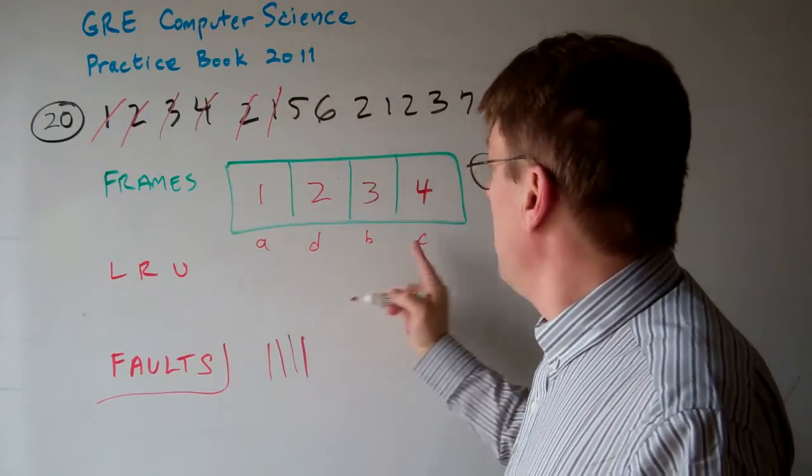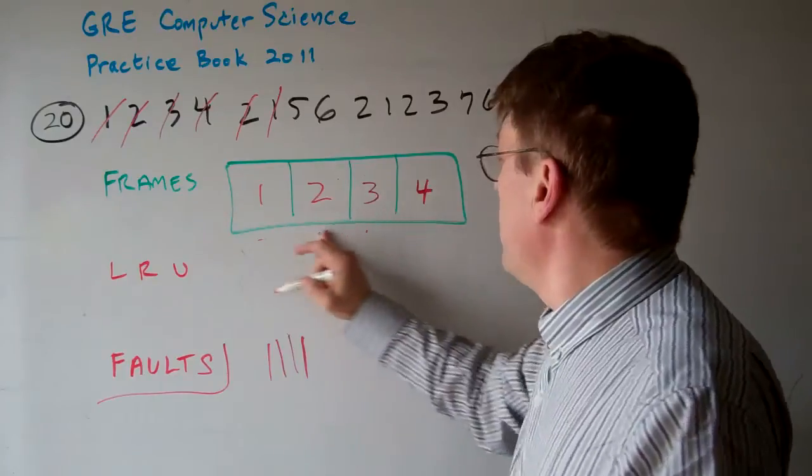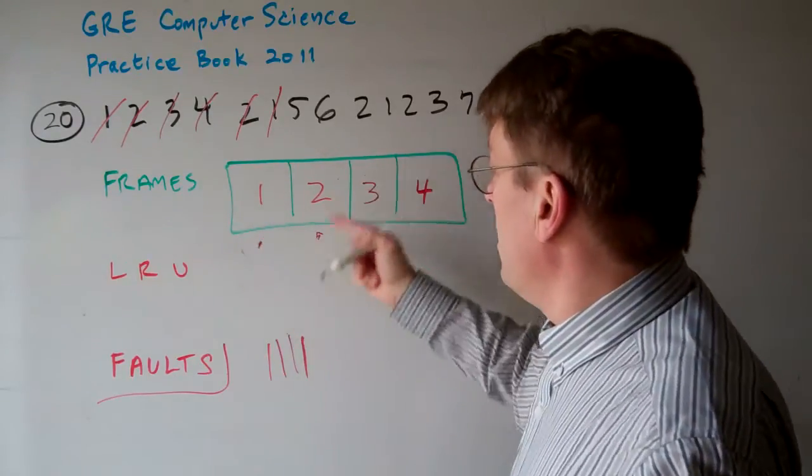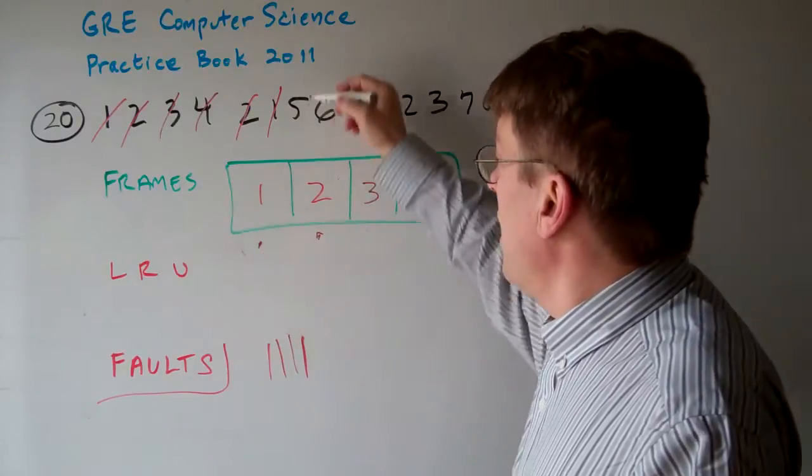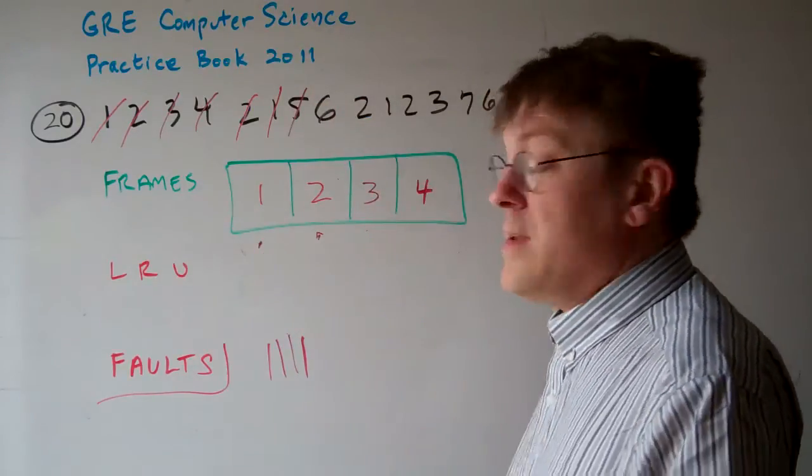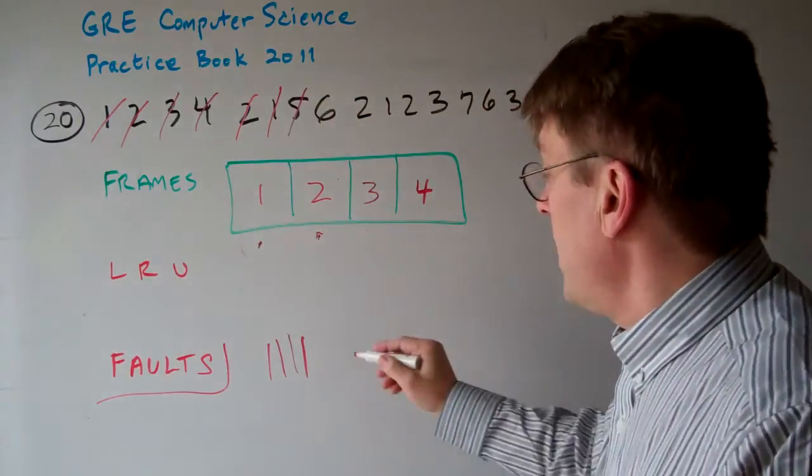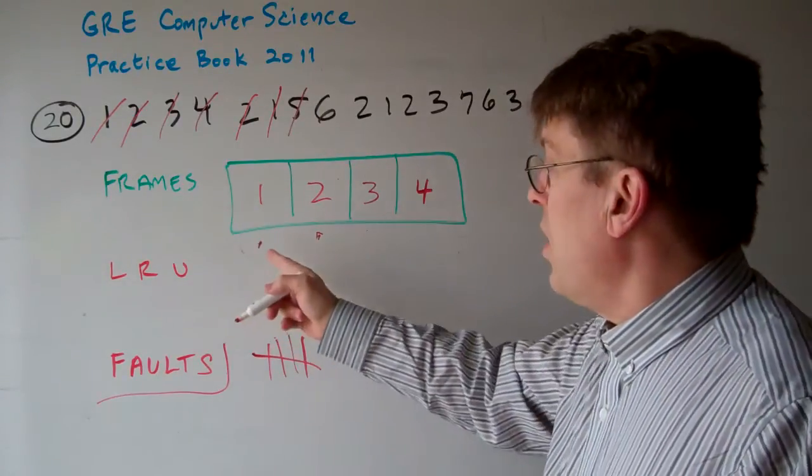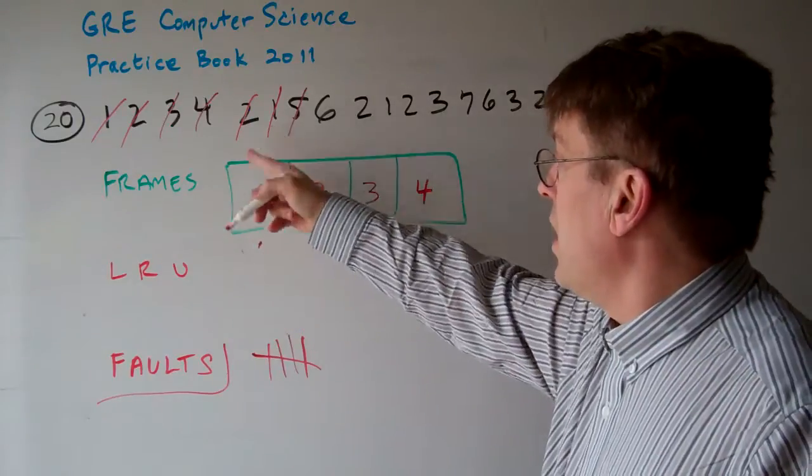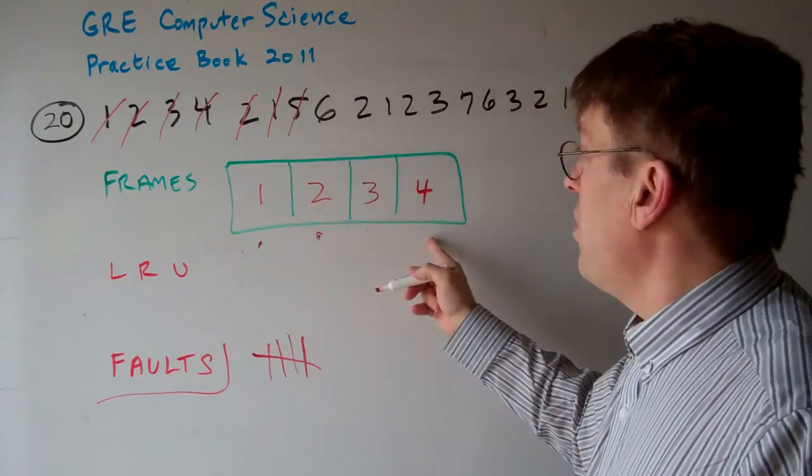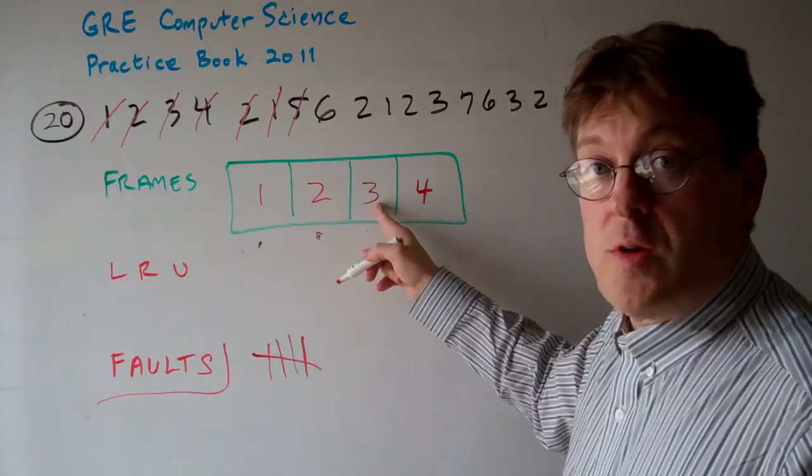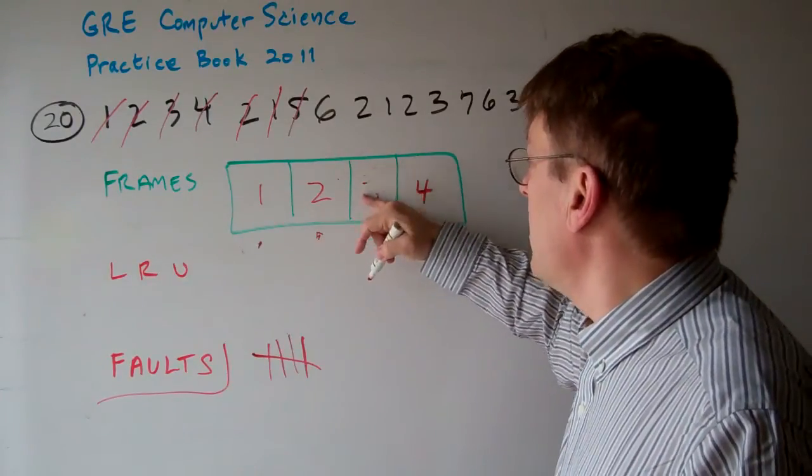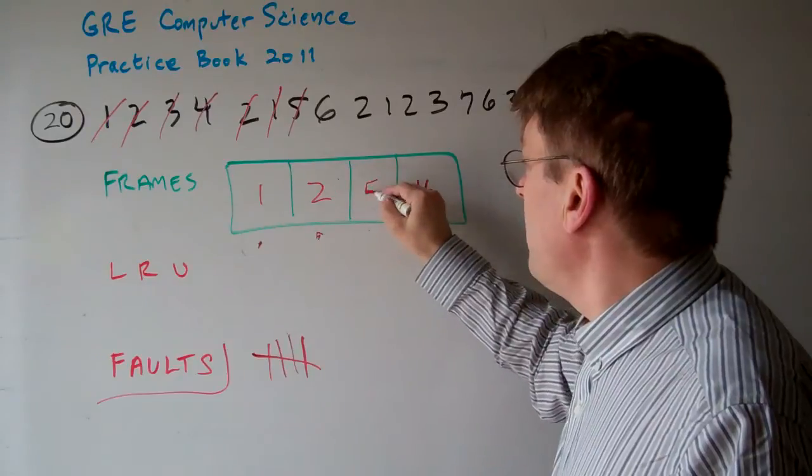Then we use one. So I'll just go ahead and keep track here. Two is used, one is used. Now one is most recently used. Five. Five is not in here, so that's going to be a fault. But now which one do we get rid of? Well, we just used one, and we used two. Four was used after three, so three is the oldest one, the least recently used. It was used least recently. So that one goes away and that becomes a five.